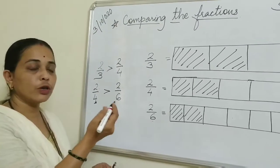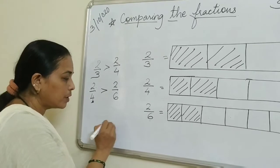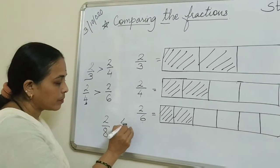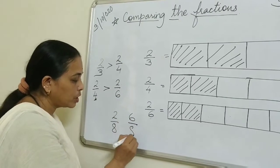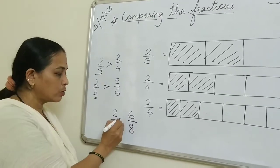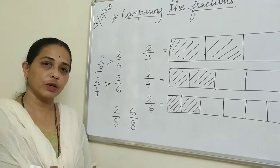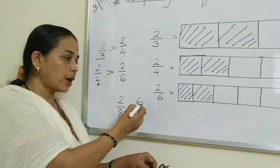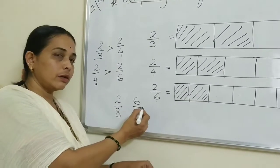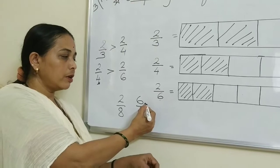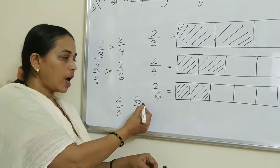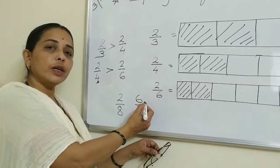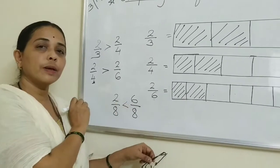So what you have learned now: if the denominators are same, you have to see the numerator. You don't need to draw a diagram every time - just look at the numbers. If the denominator is same and you have to see the numerator, the bigger numerator means that fraction is bigger.